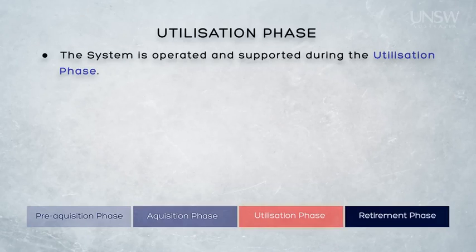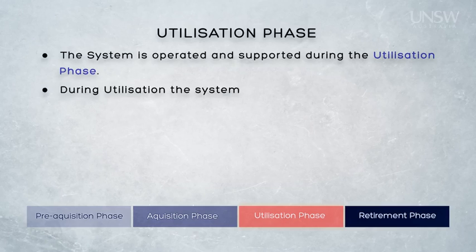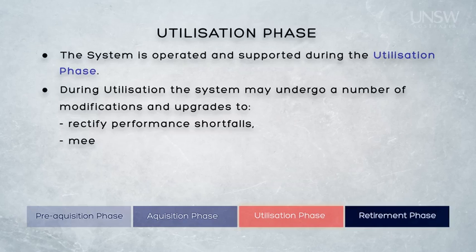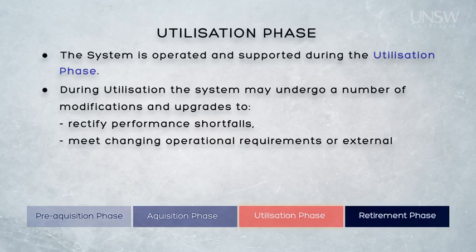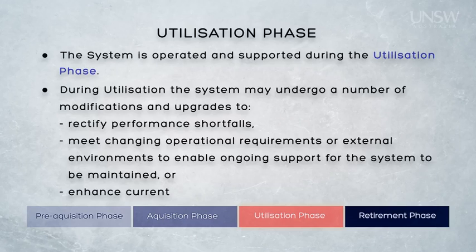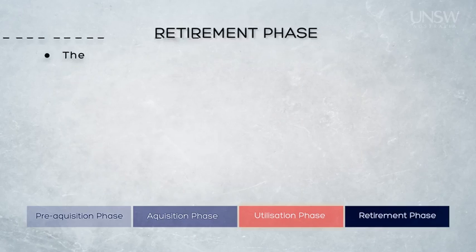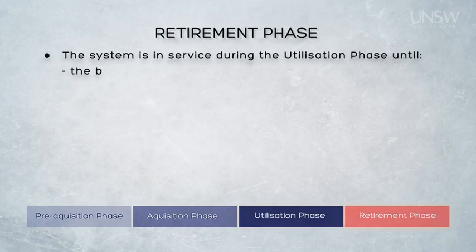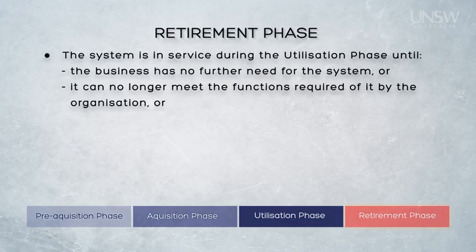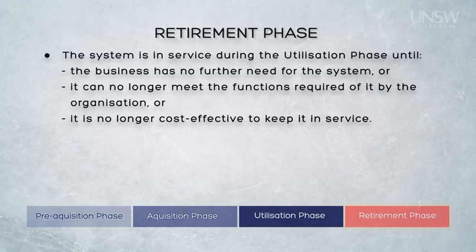The system is operated during the utilisation phase, during which time it's also supported by the organisation that owns it. During utilisation, the system may also undergo a number of modifications and upgrades of different sorts to rectify performance shortfalls, perhaps to meet a changing operational requirement, or perhaps because the external environment has changed in some way, or perhaps even because the ongoing support of the system has become expensive and needs to be modified to ease its maintenance. The system remains in service during the utilisation phase, perhaps being modified over time, until the business has no further need for the system, or it no longer can do what the organisation requires of it, or it does but it's not cost-effective to keep it in service.